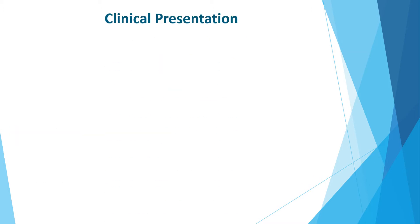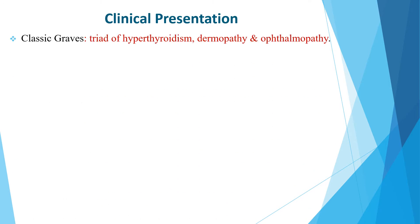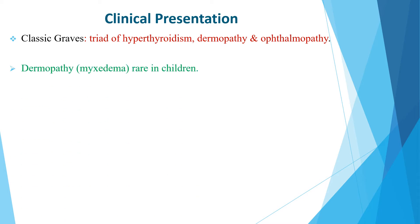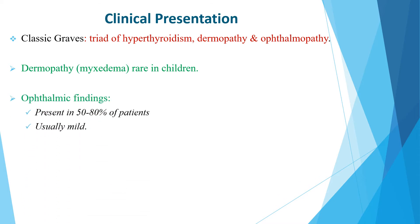The classic clinical presentation of Graves disease includes a triad of hyperthyroidism, dermopathy, and ophthalmopathy. Dermopathy is characterized by myxedema, which is rare in children, whereas ophthalmic findings are present in up to 50 to 80 percent of patients, and these findings are usually mild in children.